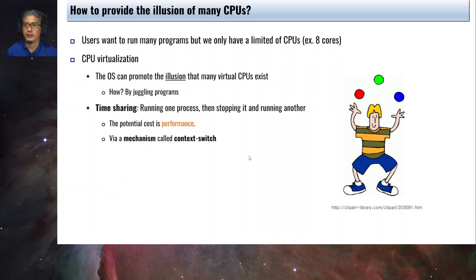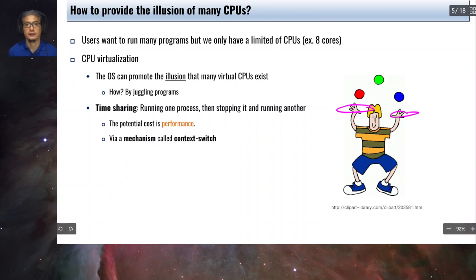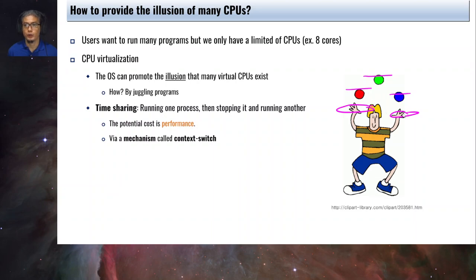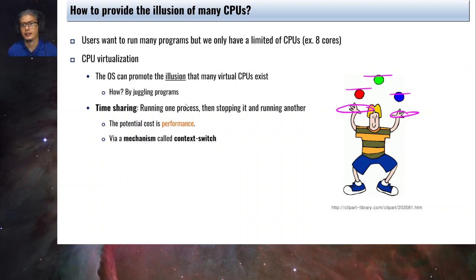The OS does this by juggling programs. We can think of the hands of the juggler as the physical CPUs, and the balls as the programs that would like to run. How can three programs run when we only have two CPUs? The way to do this is by rapidly switching from one ball to another. This is the basic idea of providing the illusion of multiple CPUs, and the technical term for that is called time sharing.